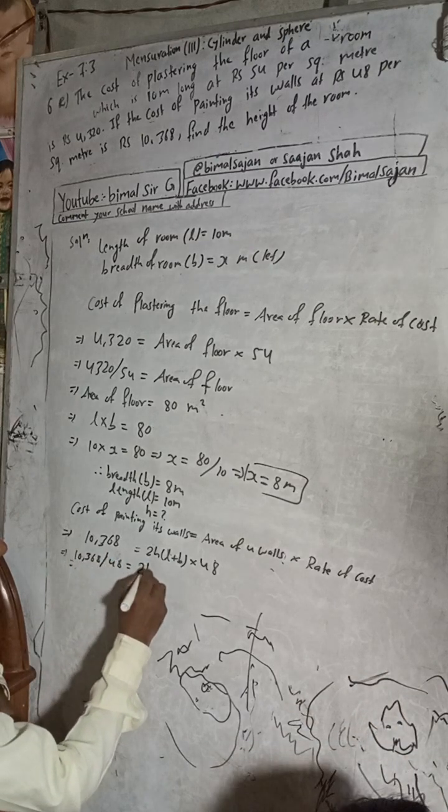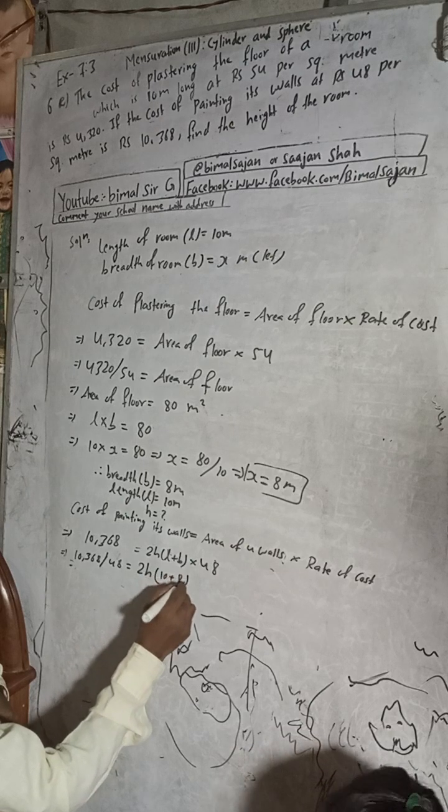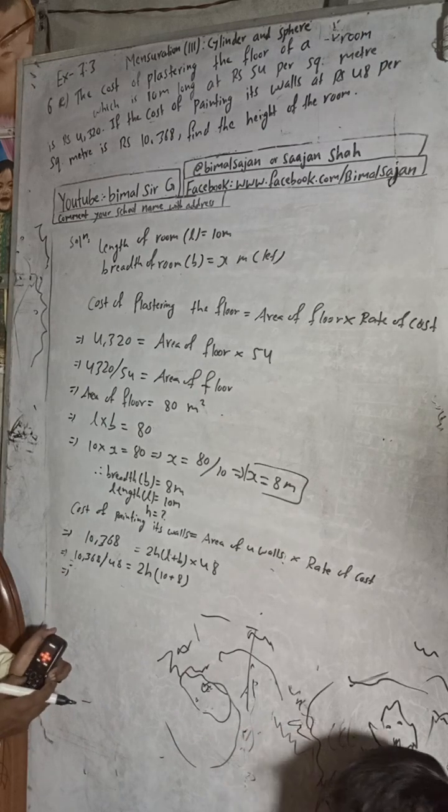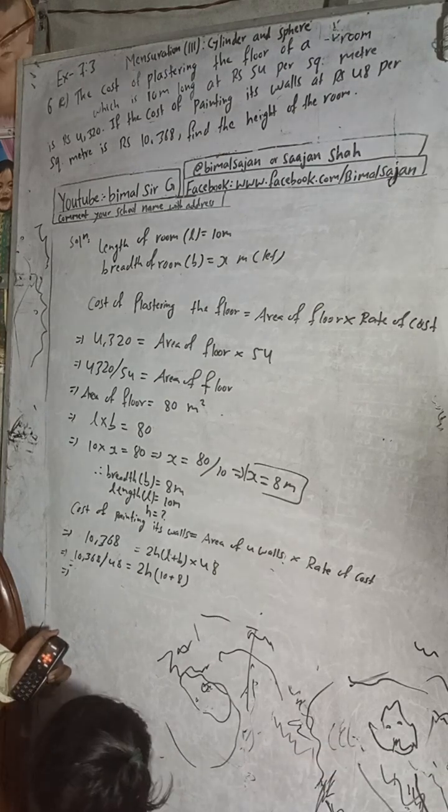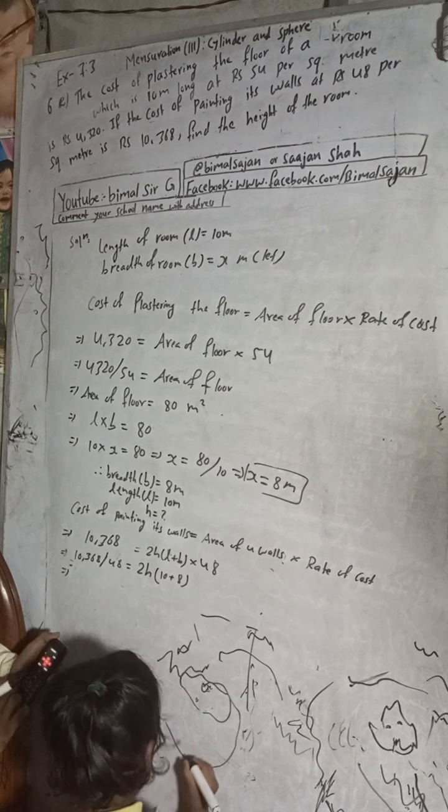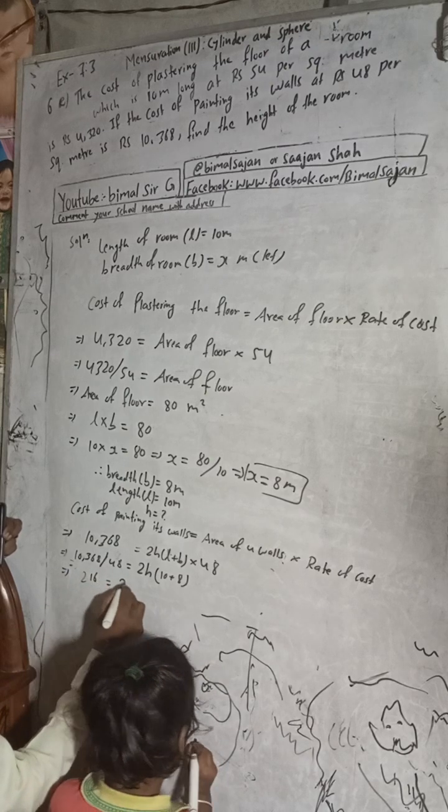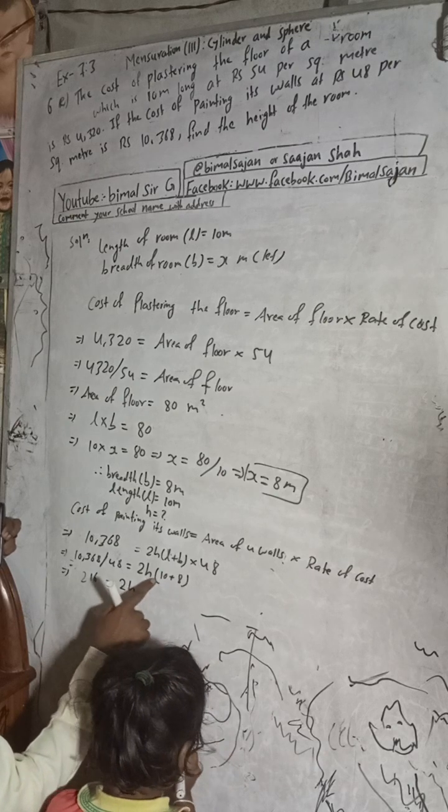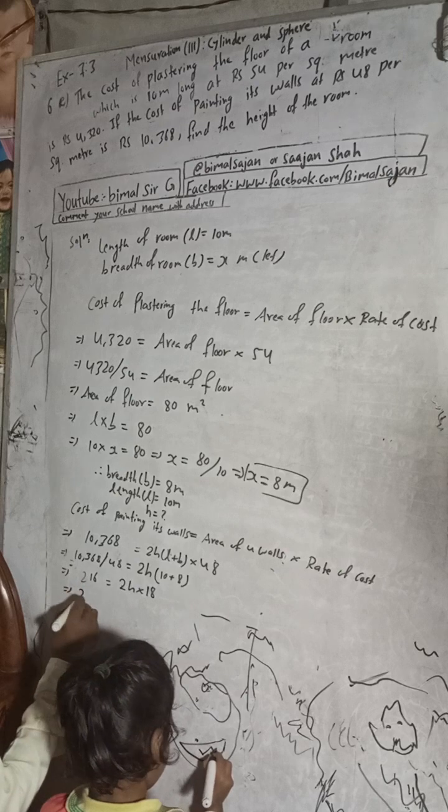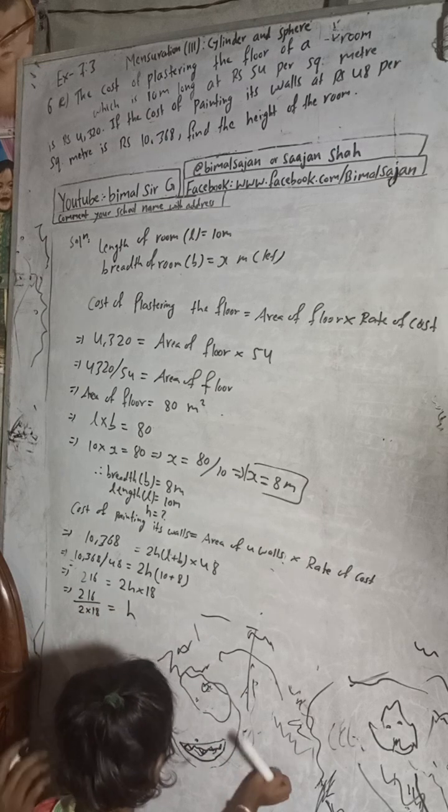Now 2H, L is 10 and B is 8, so 10 plus 8. 10368 divided by 48 is 216. So 216 equals 2H into, this is bracket, 10 plus 8 is 18. Now this is 216 divided by 2 into 18, and H is in the same side.